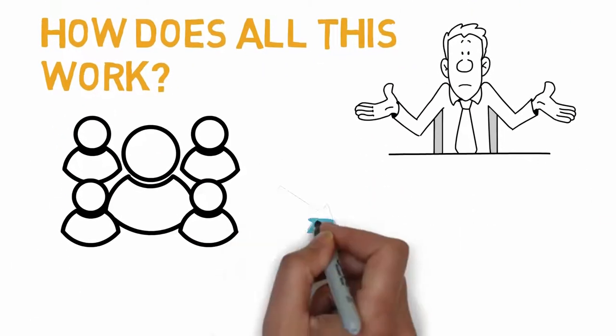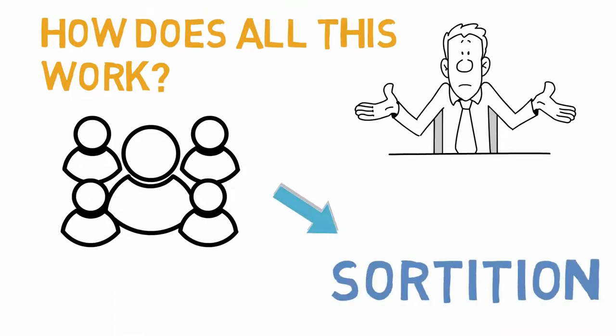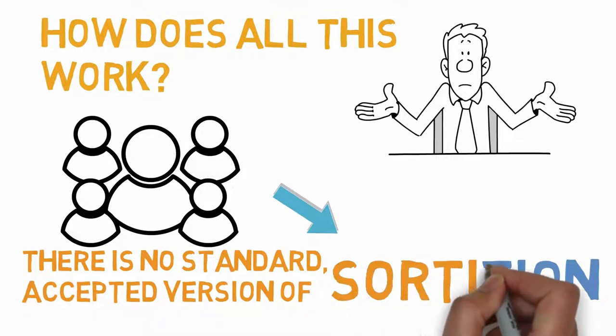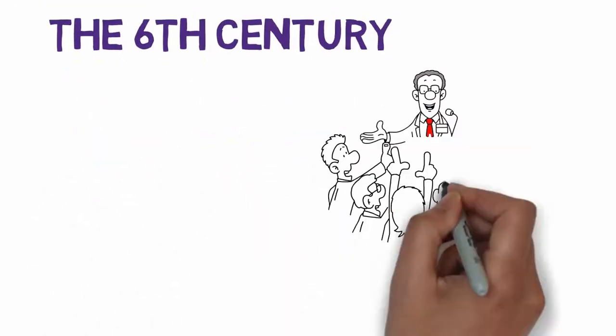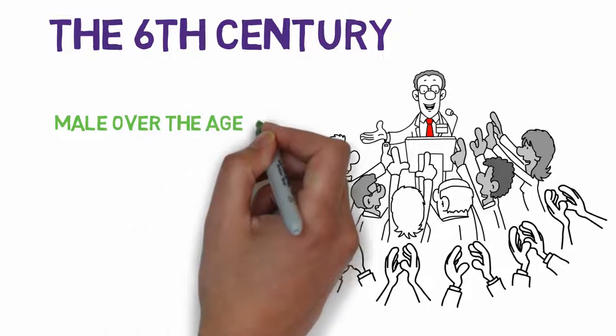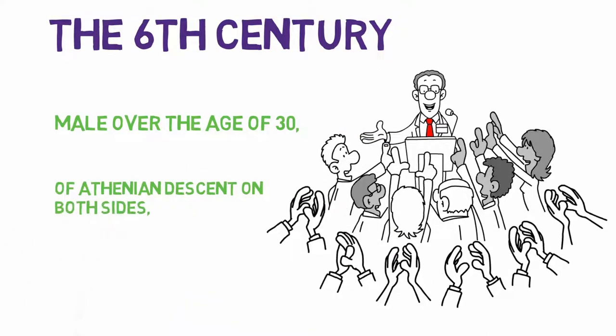The answer is that a society that implements sortition can make whatever rules it wants to make. There's no standard, accepted version of sortition. In Athens, ranging as far back as the 6th century, candidates had to be male, over the age of 30, of Athenian descent on both sides, and possessed the physical capacity for military service.